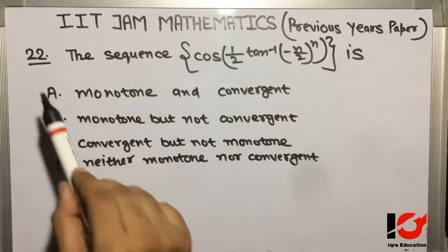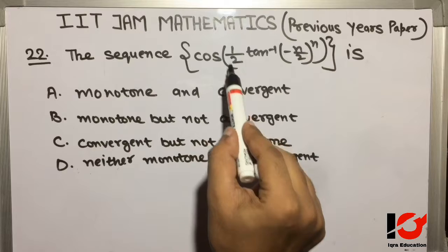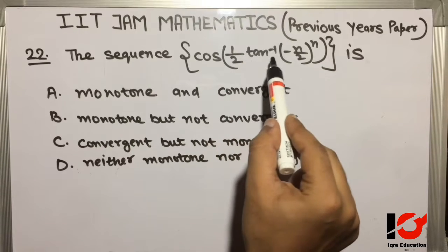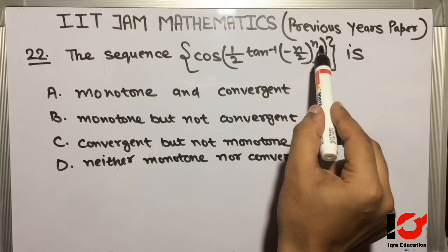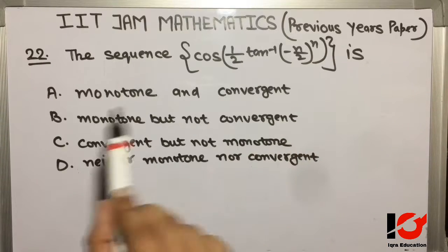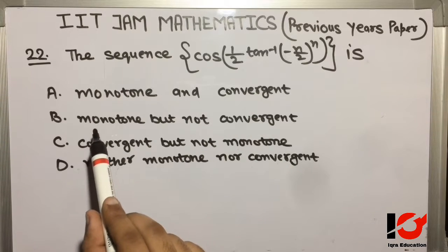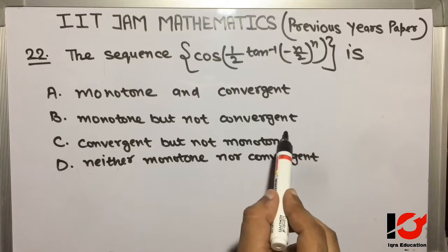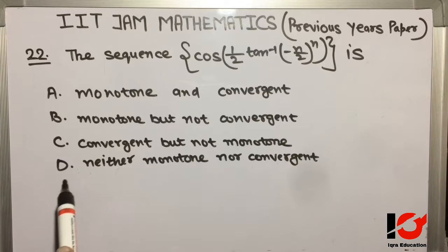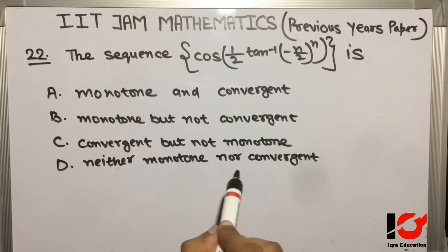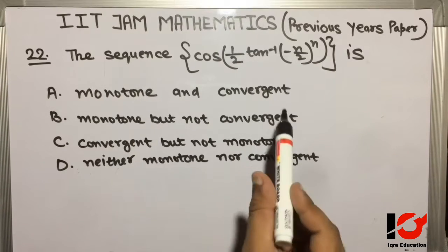Question 22: The sequence { cos(1/(2n)) - n/2^n } is: Option A: monotone and convergent. Option B: monotone but not convergent. Option C: convergent but not monotone. Option D: neither monotone nor convergent. The answer is Option A — monotone and convergent.